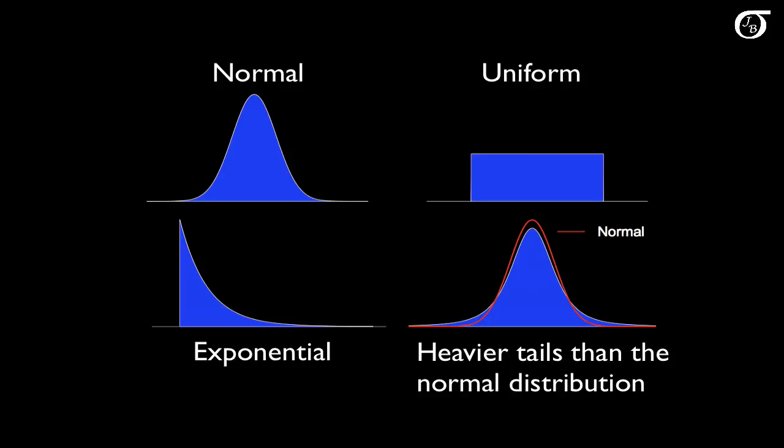Let's investigate the effect of a violation of the normality assumption using simulation. Here are the four distributions used: a normal distribution, a uniform, an exponential, and a distribution similar to the normal but with heavier tails. All of these distributions have been scaled so the variance of every distribution is equal, meaning the common variance assumption is true in every case. Here we are simply investigating the effect of the shape of the distribution.